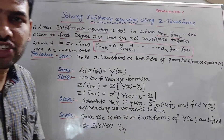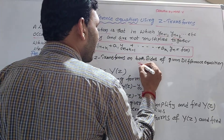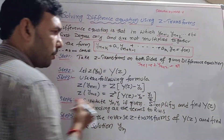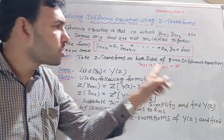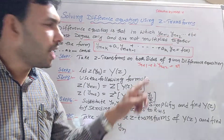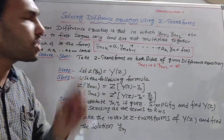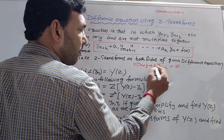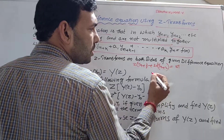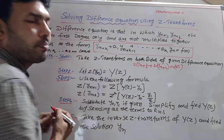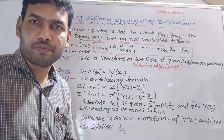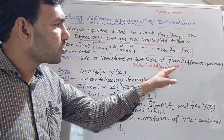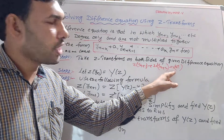So, Step 1: first, we have to solve a difference equation such as yn+1 plus 2 into yn+2 equal to 3 to the power n. This is how to solve a difference equation. First, take Z transform on both sides and simply write Z before every term: Z of yn+1 plus 2 into Z of yn+1 equals Z of 3 power n. Just write Z before every term, keeping constants as they are.